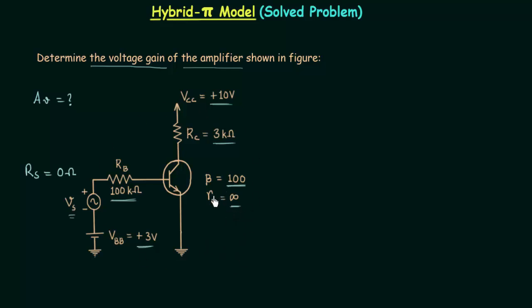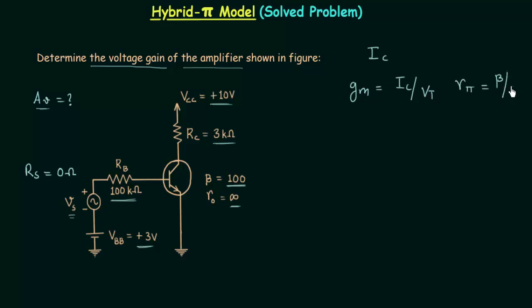We have to use all these values to find the voltage gain of the amplifier circuit. We will use the hybrid pi model as the transistor equivalent model, and for that we need the DC collector current IC, because GM the transconductance is equal to IC divided by Vt, and Rpi is equal to β divided by GM.